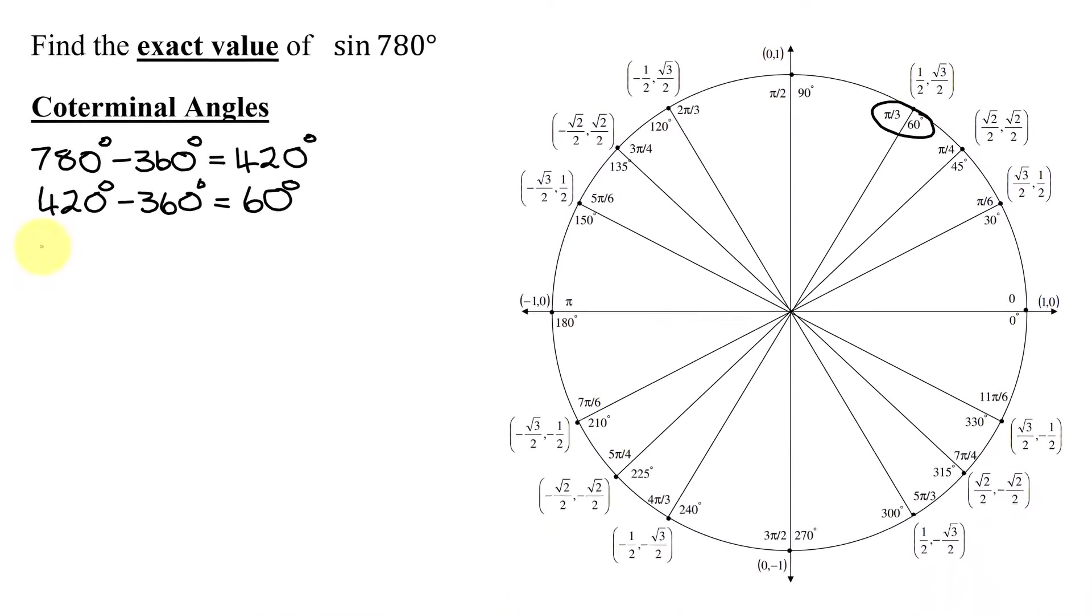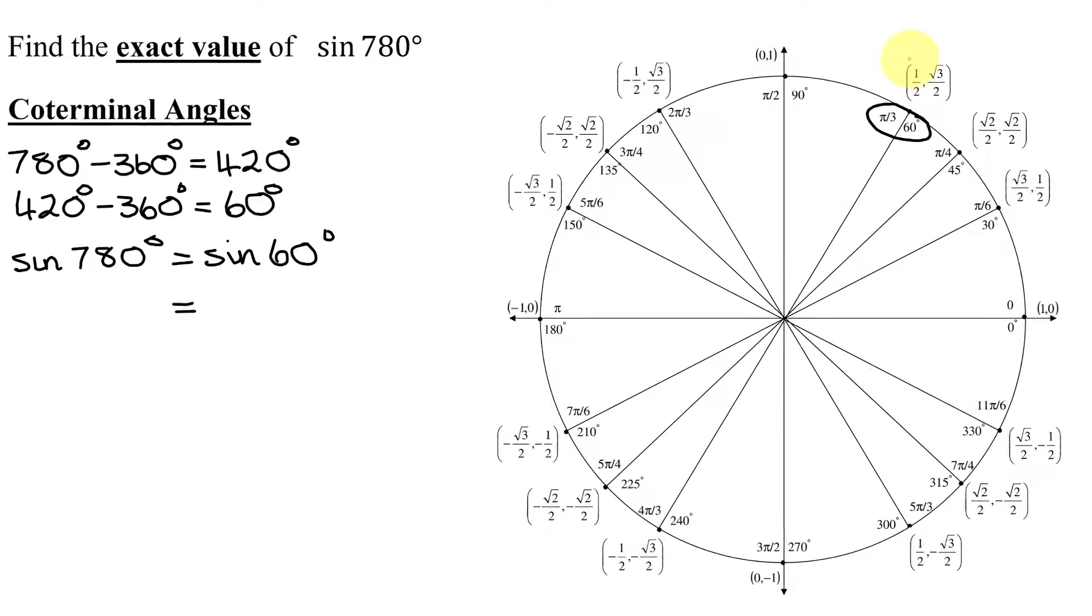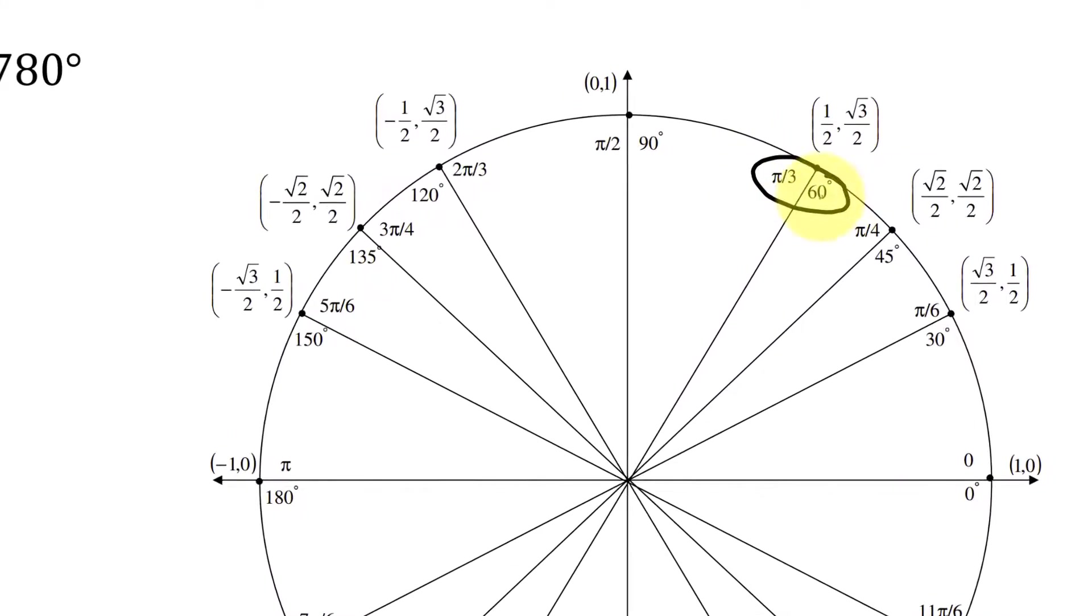So now I know that the sine of 780 degrees equals the sine of its coterminal angle of 60 degrees. And remember on the unit circle, the x-coordinate is the cosine of that angle. The y-coordinate is the sine of that angle.